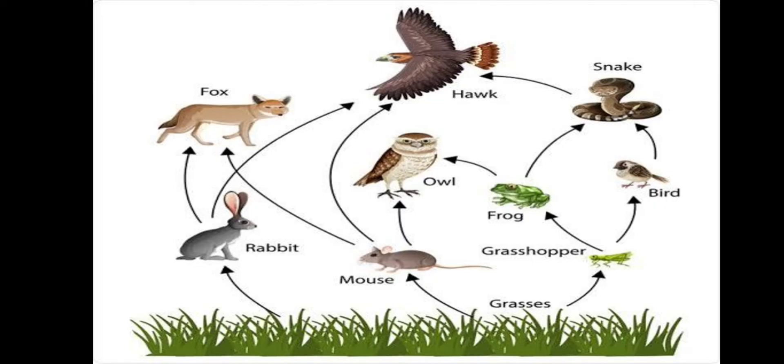The eagle is a predator, and this represents a complete food chain effect, which is why we call it Trophic Cascade.